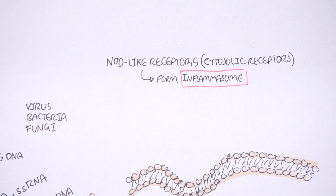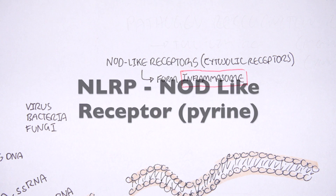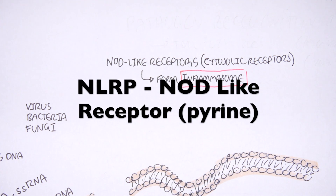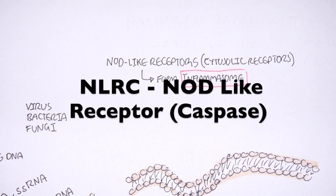The human genome actually encodes for 23 NOD-like receptor proteins, broadly divided into two categories. The first is NOD-like receptors with a pyrin domain — NLRP — and then you have NOD-like receptors with a caspase recruitment domain — NLRC. We are only going to talk about three NOD-like receptors.